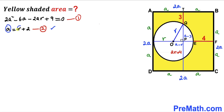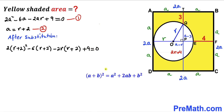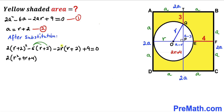From Equation 2, a = r + 2. Substituting into Equation 1 wherever a appears: 2(r + 2)² − 6(r + 2) − 2r(r + 2) + 9 = 0. Expanding (r + 2)² using the identity (a + b)² = a² + 2ab + b² gives r² + 4r + 4.